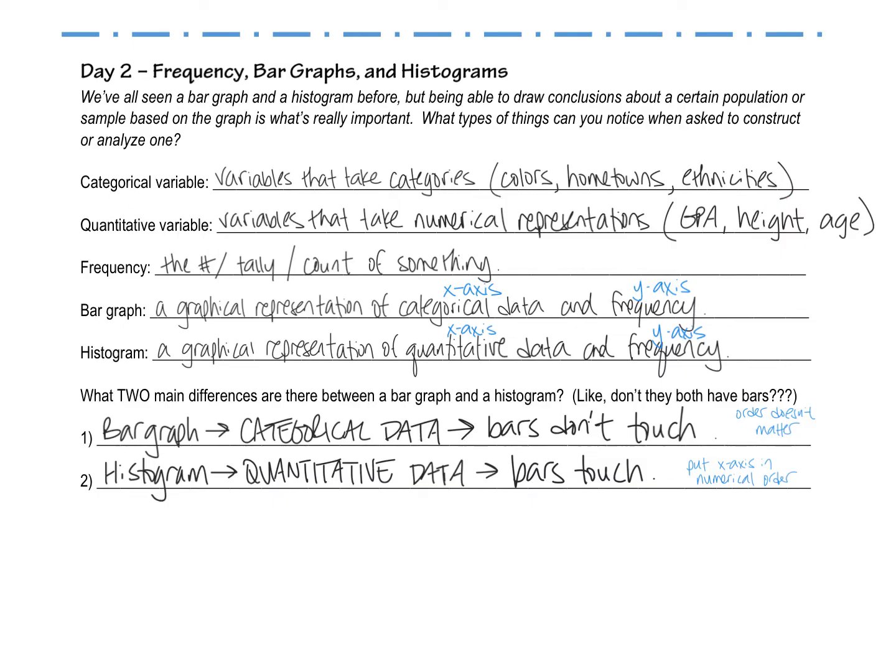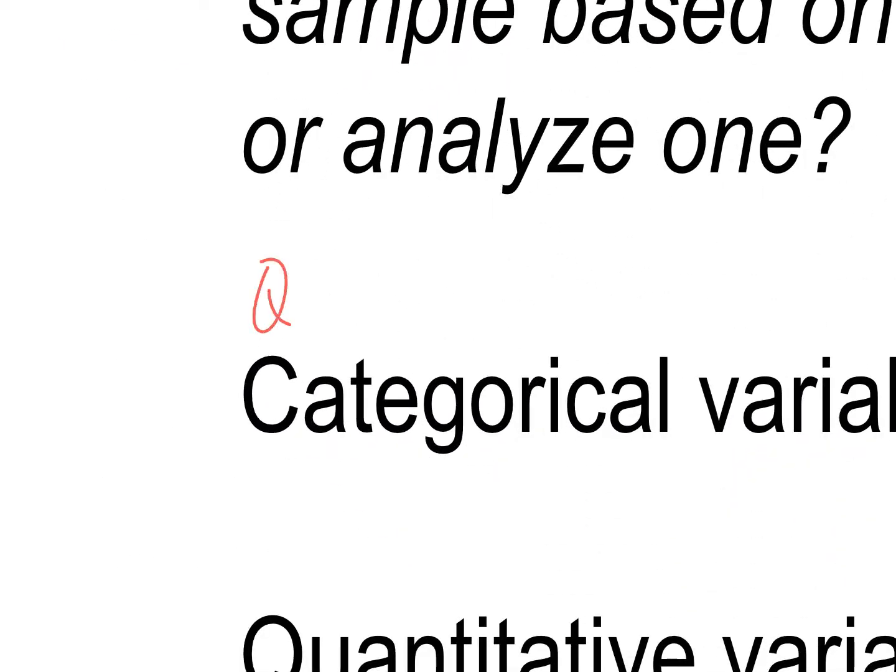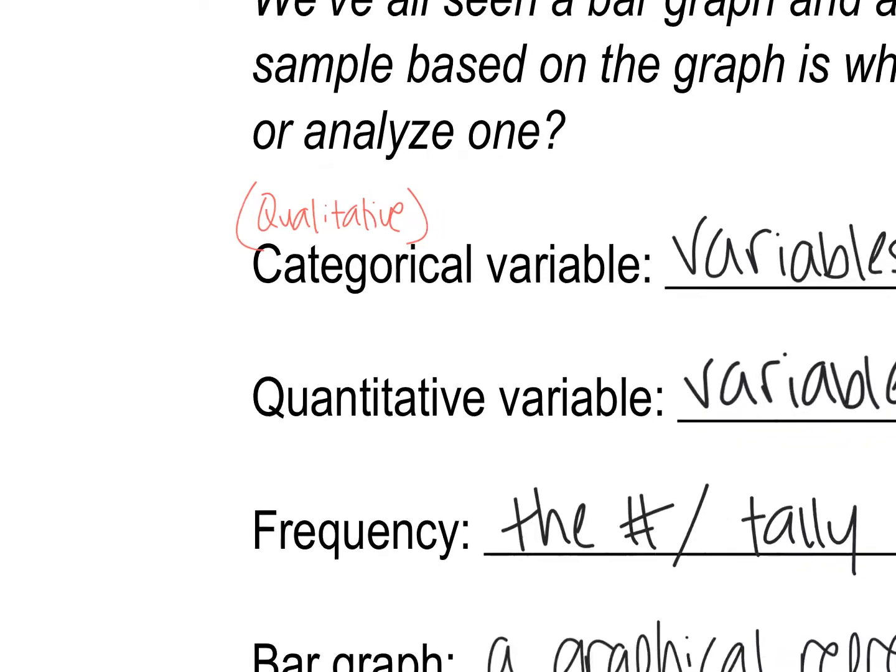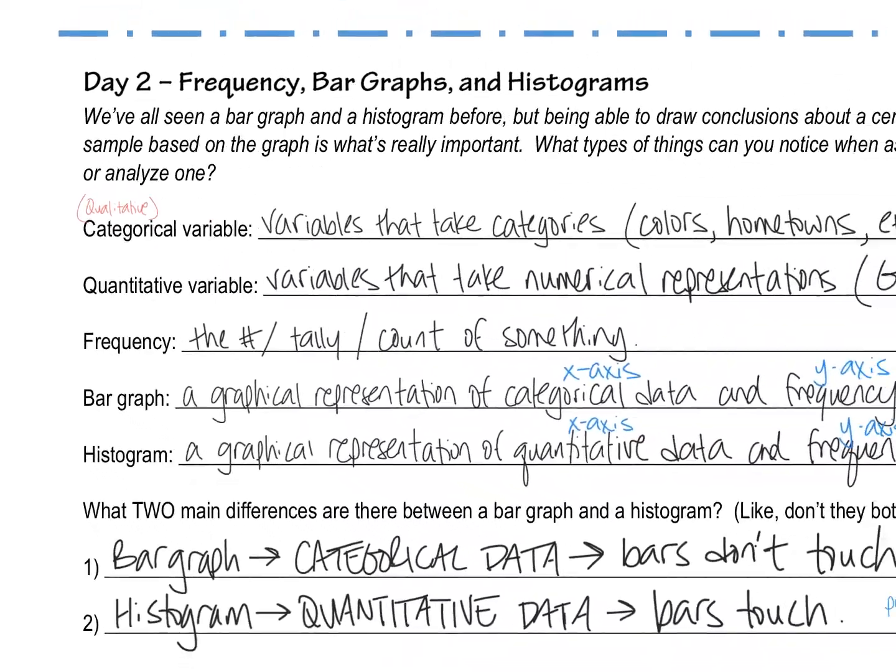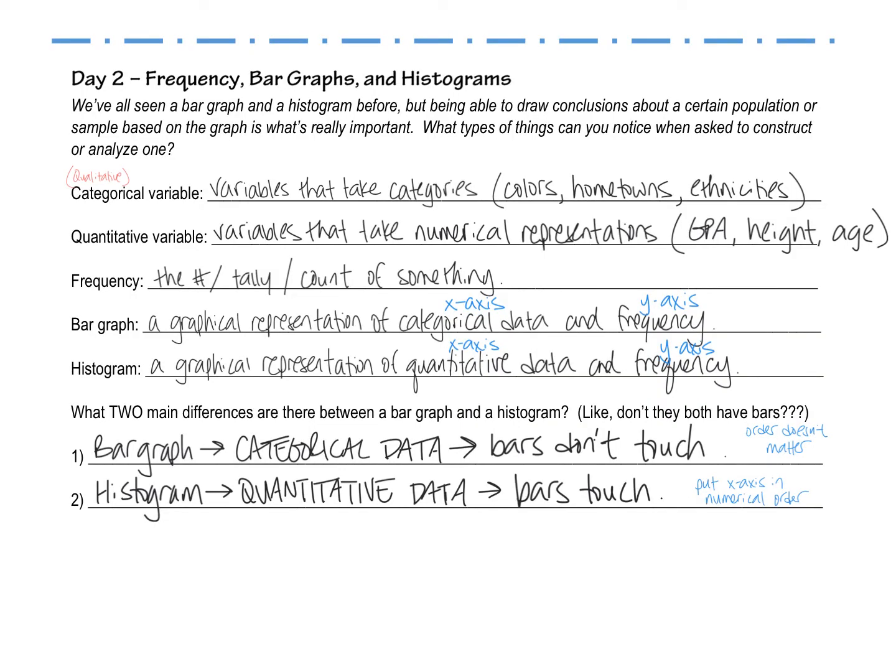Just as a side note, sometimes categorical variables are also referred to as qualitative. That's just another word for it. Our textbook doesn't use that word. But just as an FYI, if you go on to college to study anything that has to do with statistics, sometimes they will use qualitative in terms of these variables, as opposed to the word categorical.